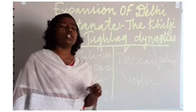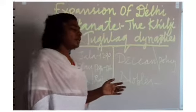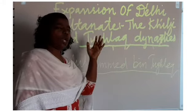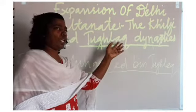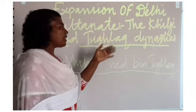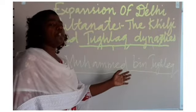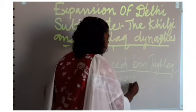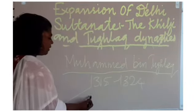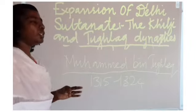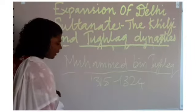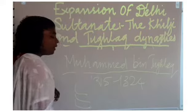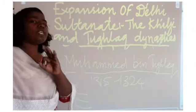We will see the three important policies followed by Muhammad bin Tughluq. After the Khalji dynasty came to an end, Ghiyasuddin Tughluq became the first ruler of the Tughluq dynasty. After Ghiyasuddin Tughluq, Muhammad bin Tughluq came into power and ruled from 1325 to 1351. During his period, he brought three important policies. Muhammad bin Tughluq is often called the foolish Tughluq.